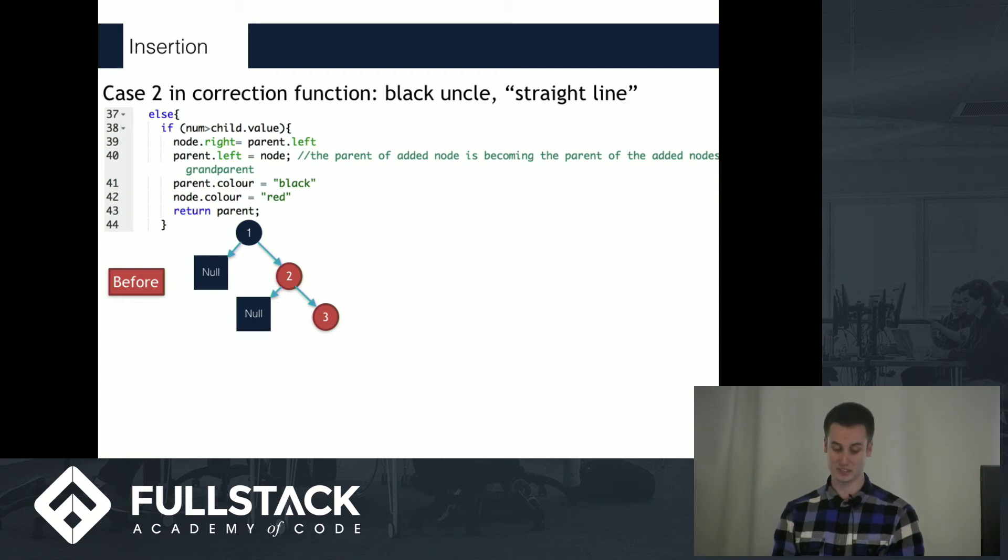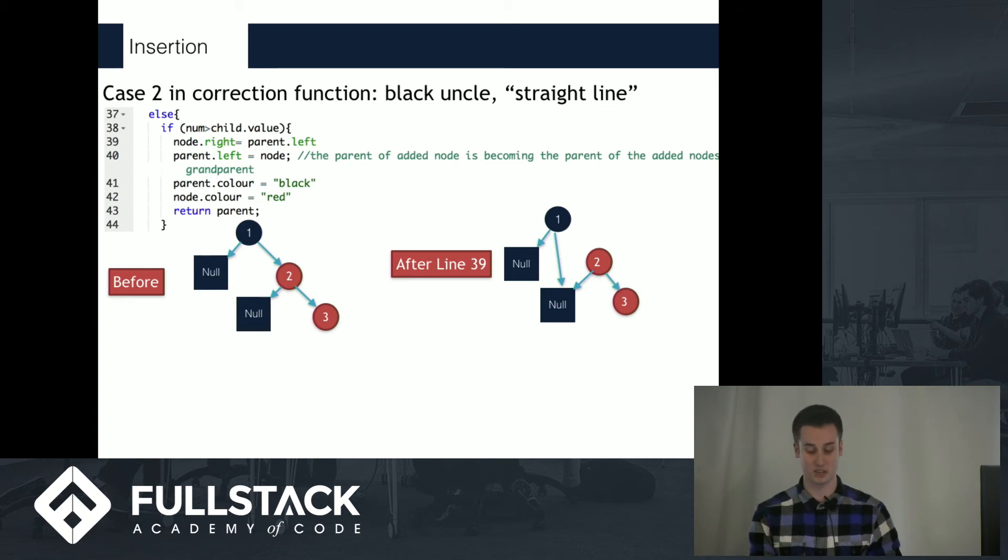In this case, what we do is a rotation. I'm going to walk through it line of code by line of code because it's a bit complicated. The first step is that we're reassigning the pointer of the grandparent node to be the child of the parent node.